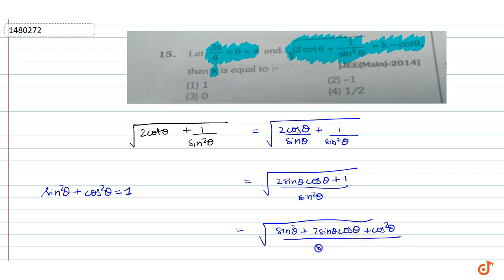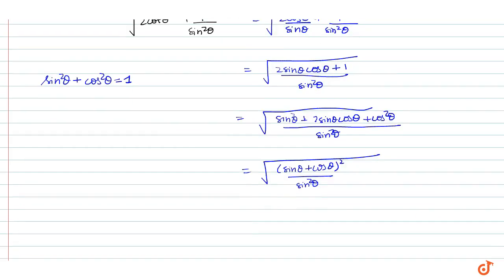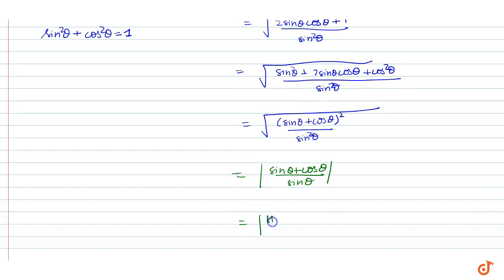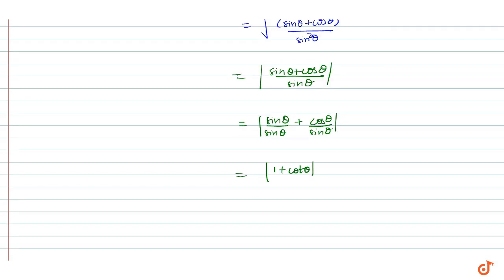This gives us √((sinθ + cosθ)²/sin²θ), which simplifies to |sinθ + cosθ|/sinθ, equal to |1 + cosθ/sinθ|, that is |1 + cotθ|.